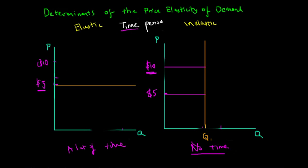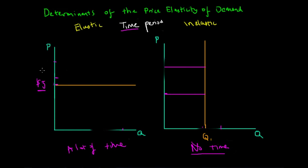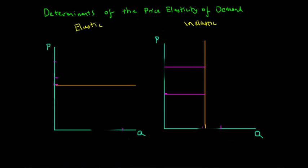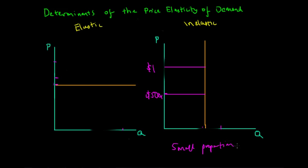Another example where price elasticity of demand is fairly inelastic is where we consider the relative importance of the product to our income. If a product increased from $0.50 to $1 and we earn $100,000 a year without many financial commitments, we would not think twice about buying that same product because it represents only a small proportion of our income.